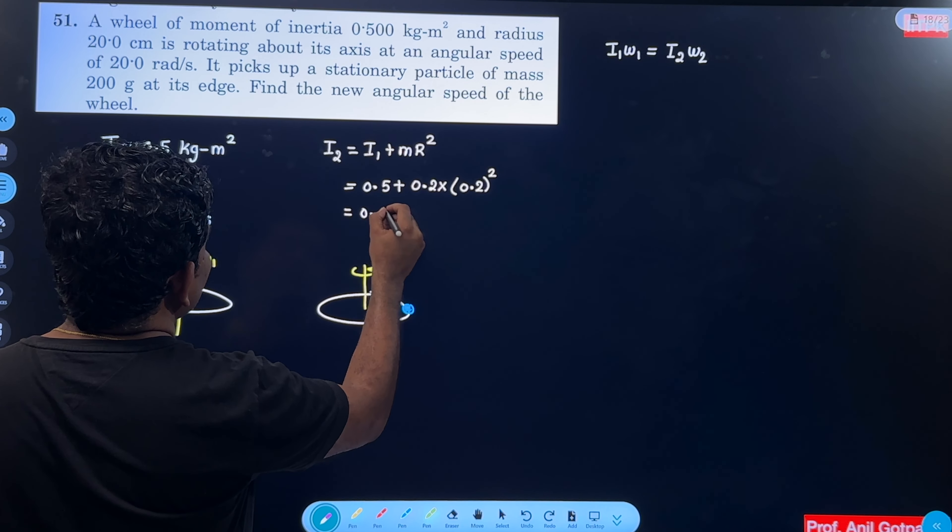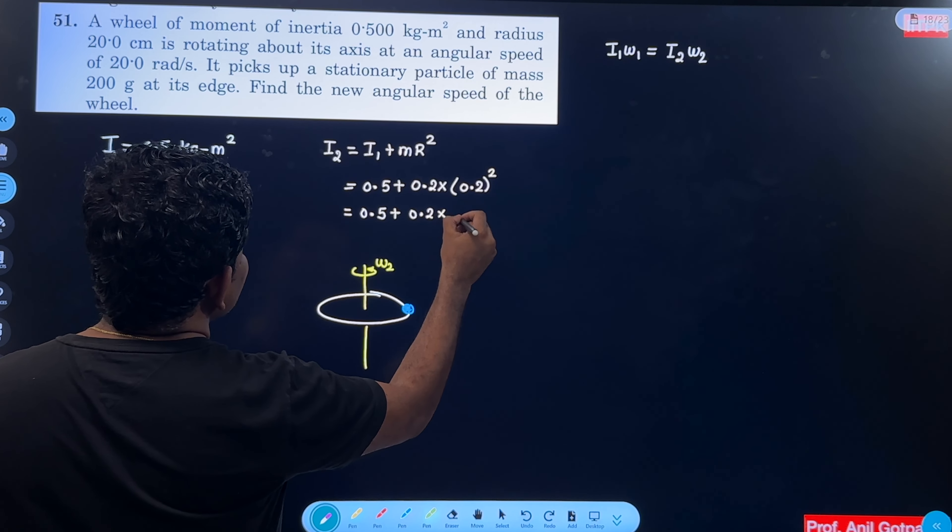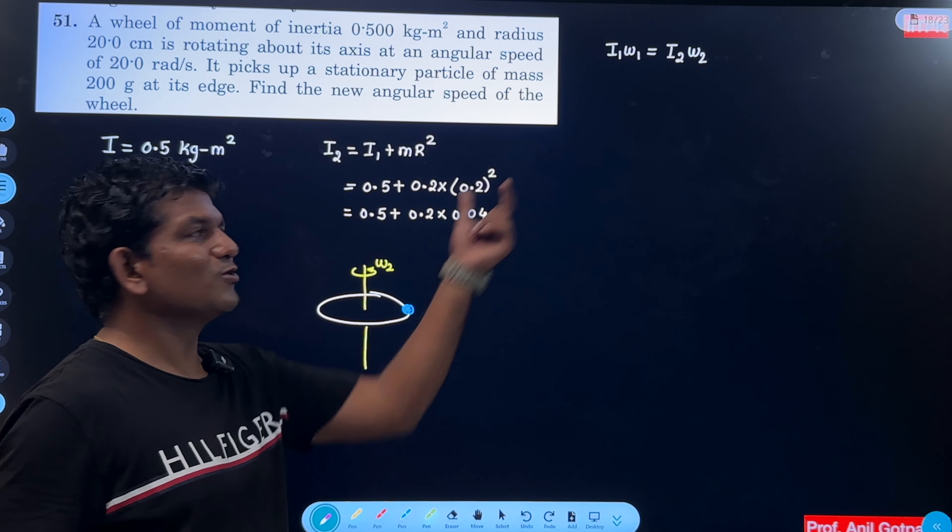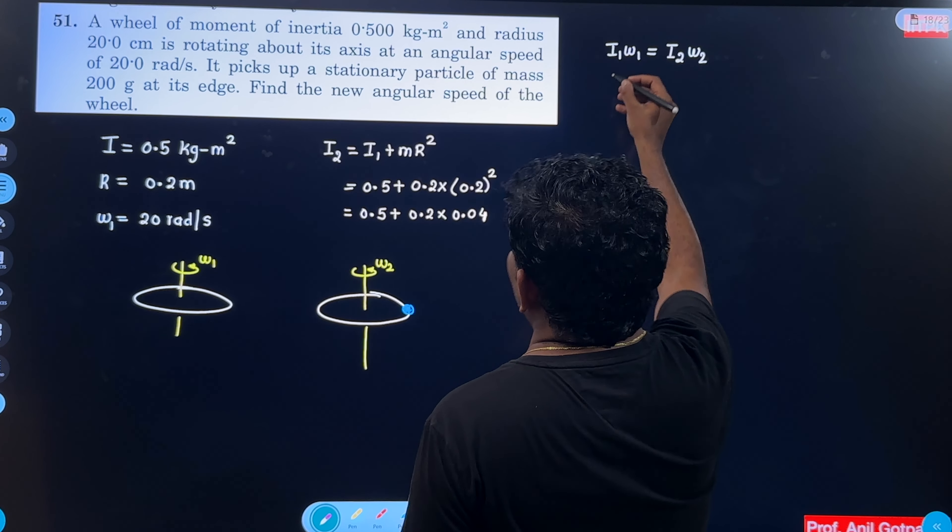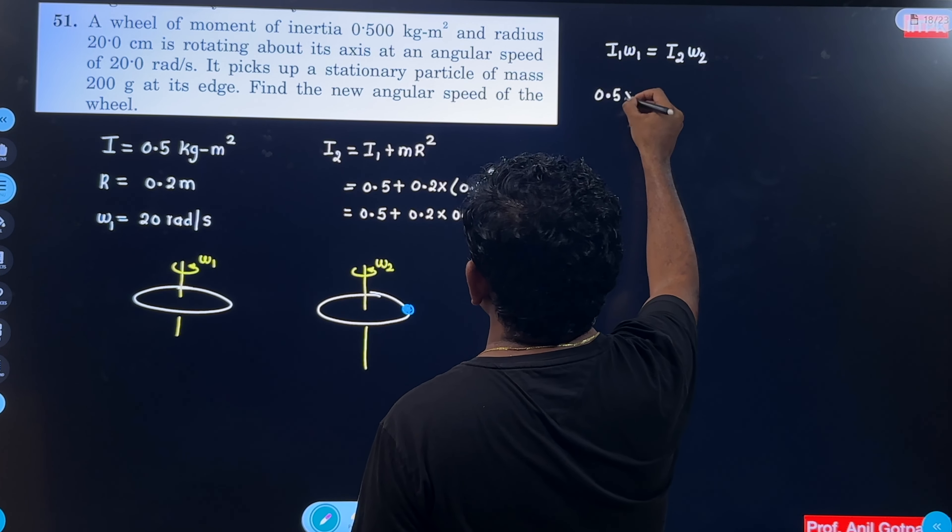So I1 omega 1, so I1 is 0.5, omega 1 is 20.